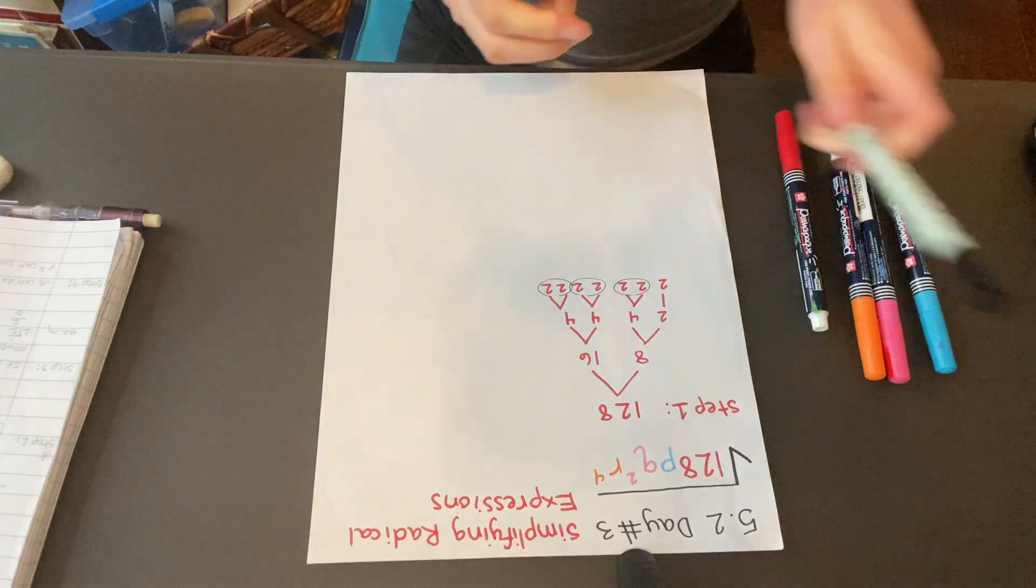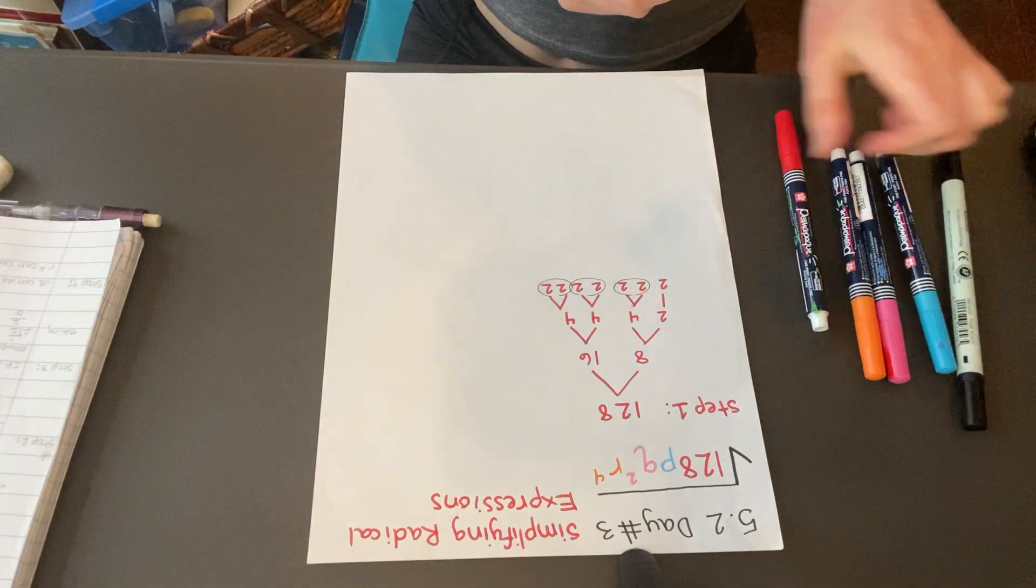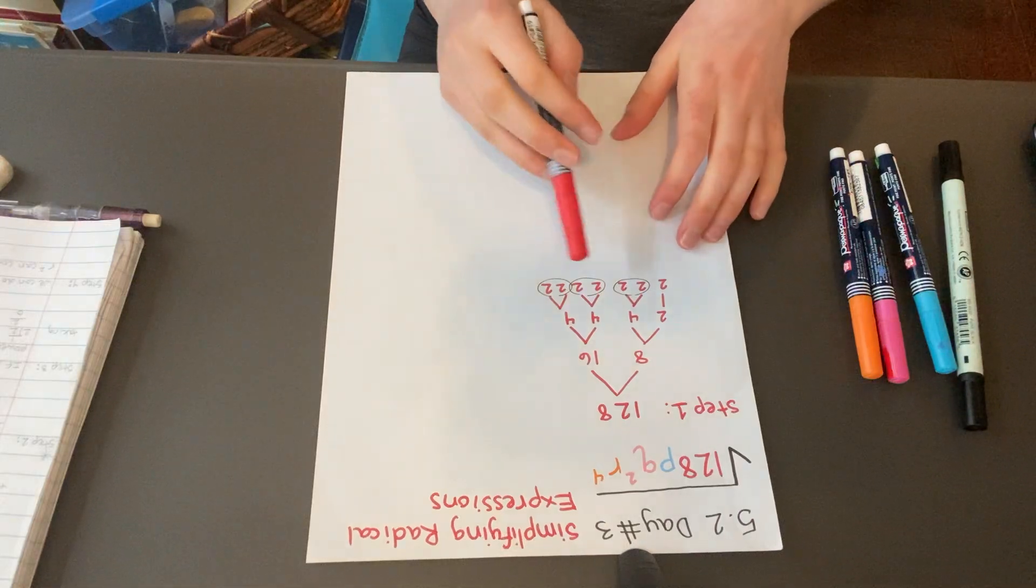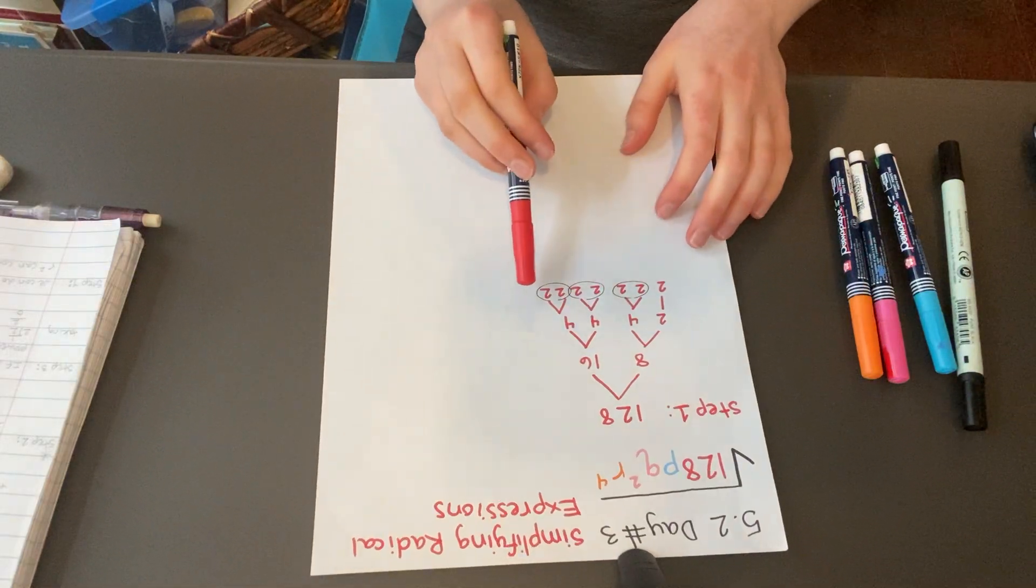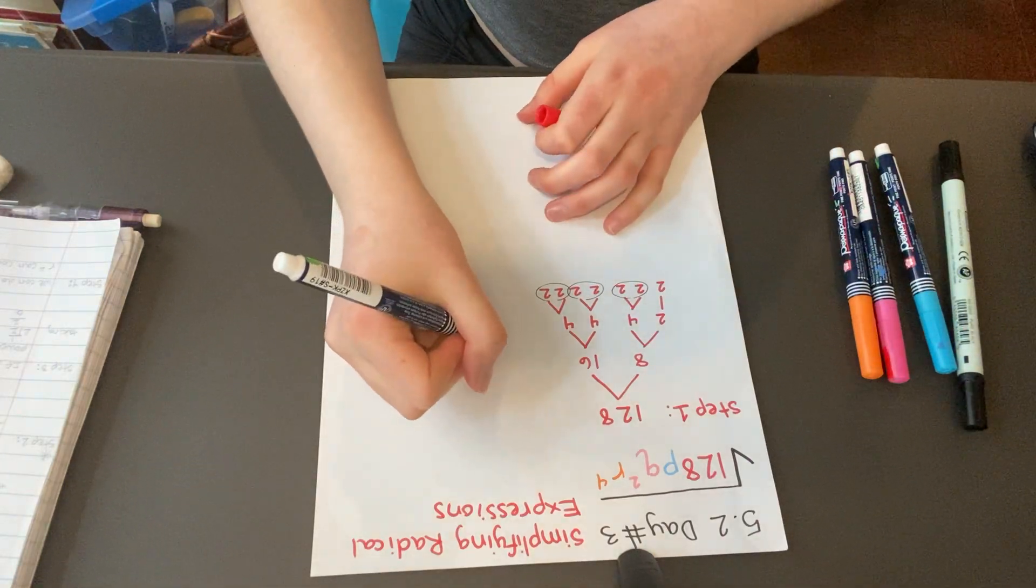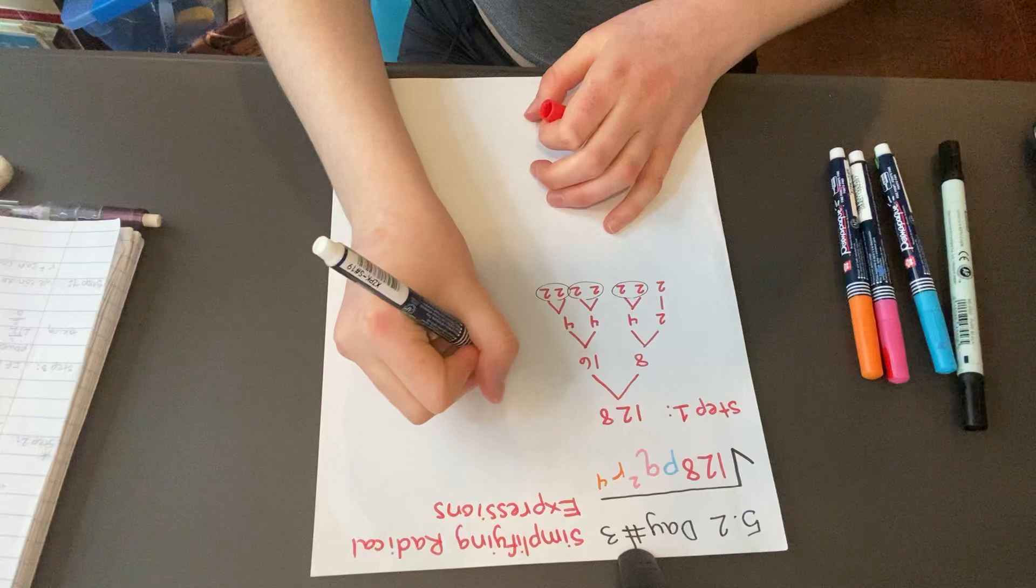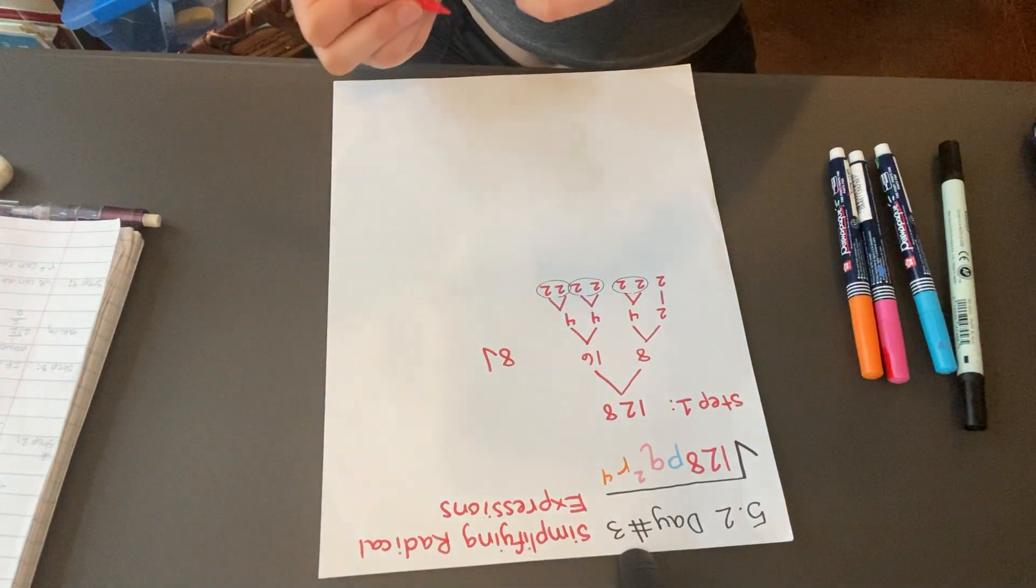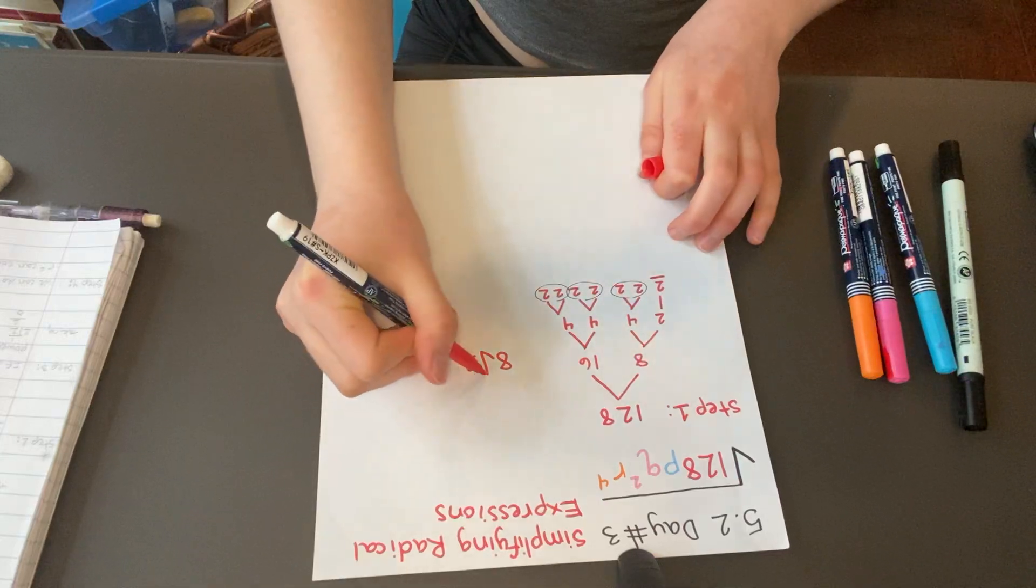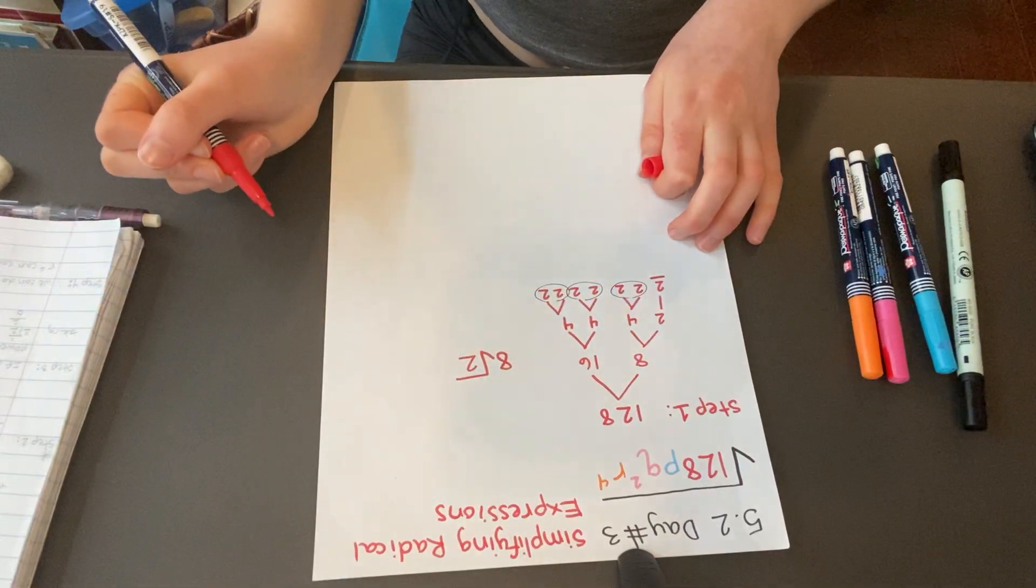Right now we have 3 pairs of 2, so there's 1, 2, and 3. Since we have 3 sets of 2, we can bring out an 8 because 2 to the 3rd is 8. Bringing out an 8 in front of the radical sign, and then we have 1, 2 left over right here, so that's going to stay under the radical.